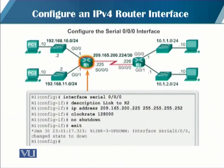To configure the serial interface 0/0/0 of router R1, the commands are: 'interface serial 0/0/0', set the description 'link to R2', configure the IP address and subnet mask. Because it is a serial interface connected to the other end with the DCE end, you are also required to provide the clock rate.